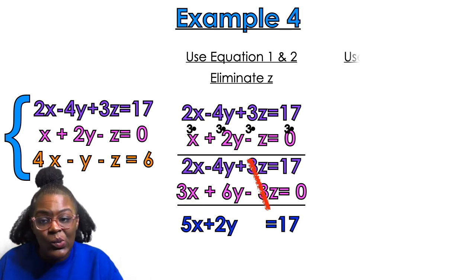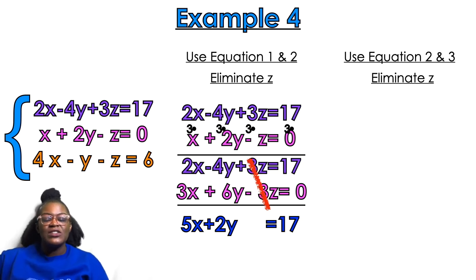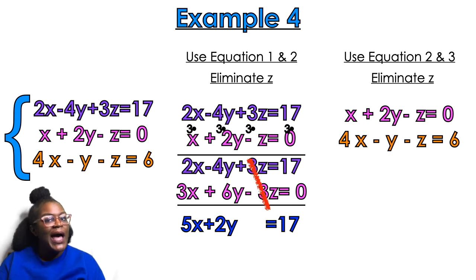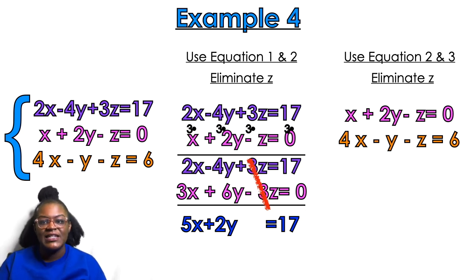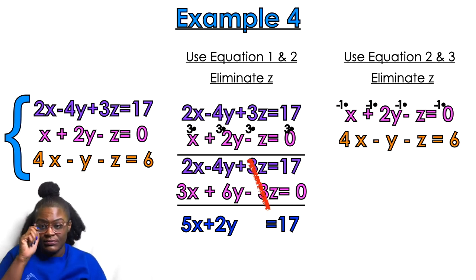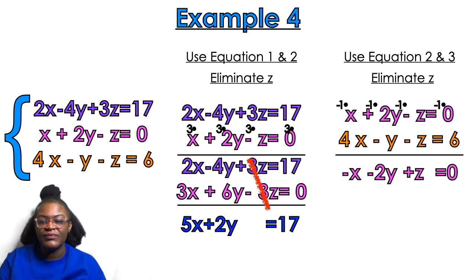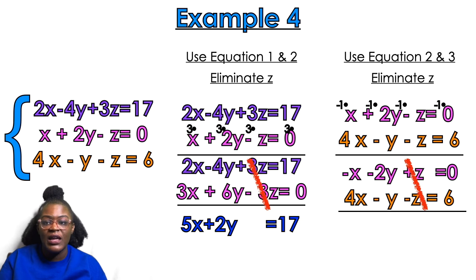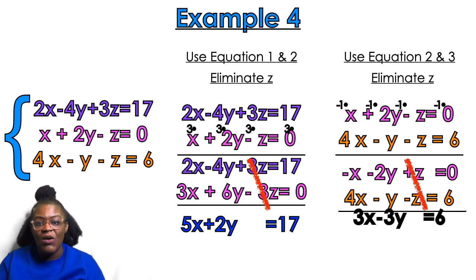Now I'll eliminate z a second time using the pink and orange equations. Both z's are negative, so one needs to become positive. I multiply the top (pink) equation by negative 1. Rewriting: I get negative x minus 2y plus z equals 0. Now I cancel out the z's and add down: negative 1 plus 4 gives me 3x, negative 2 minus 1y gives me negative 3y, and 0 plus 6 equals 6. So now I have my two-variable blue and black equations.